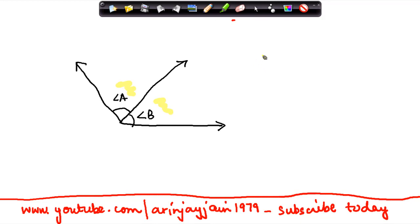Now, what do I note here? Both angle A and angle B have a common vertex.